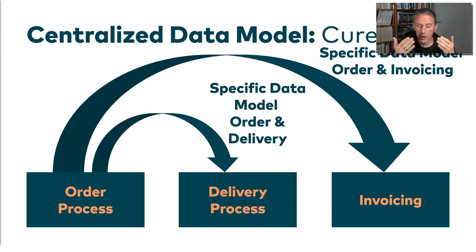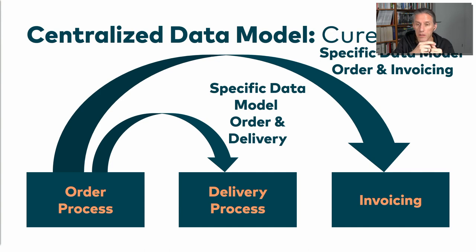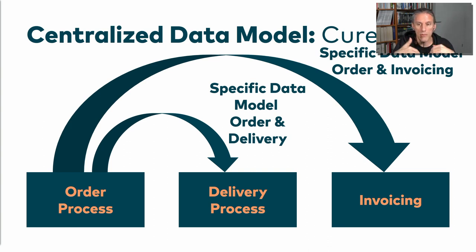For delivery, you want to know how many items are ordered, the weight, the size, and where to ship them. But for the invoice, you need the billing address and the prices — information you don't need for delivery. So splitting into those separate data models makes a lot of sense, because thinking about it, they are actually two different things you're interested in. From that perspective, it's probably the better way of doing it.